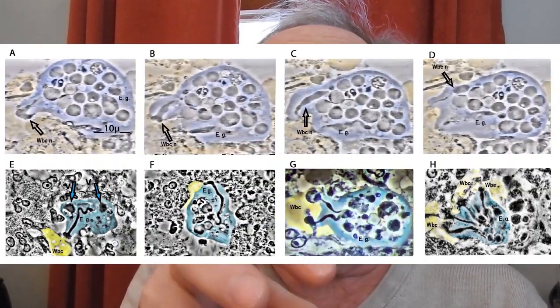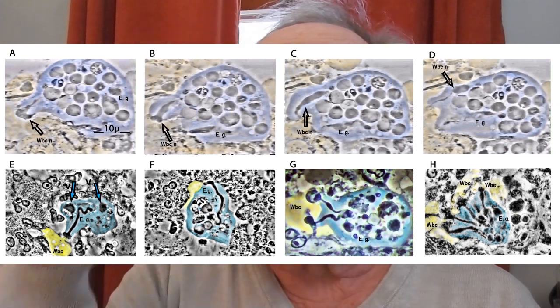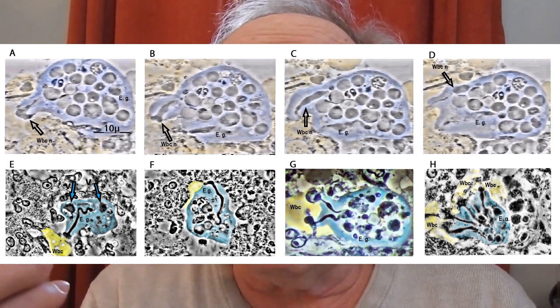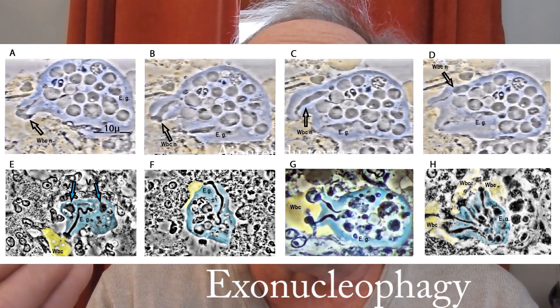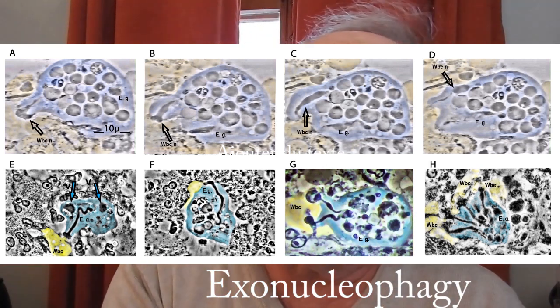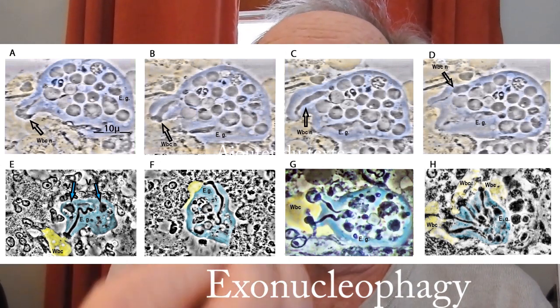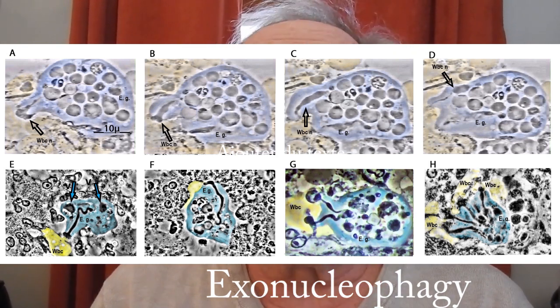When we observe what's going on within the periodontal sulcus of patients, in figure 4A, you see the amoeba ingesting at the beginning the nucleus of the white cell, and then it goes on B, C, and D until they absorb, they phagocytize the complete nucleus of the white cell. This we call exonucleophagia, which is a typical pathogen characteristic. Having an amoeba not present in health, present in 100% of disease, eating the nucleus of your immune cell makes it really a pathogen parasite.